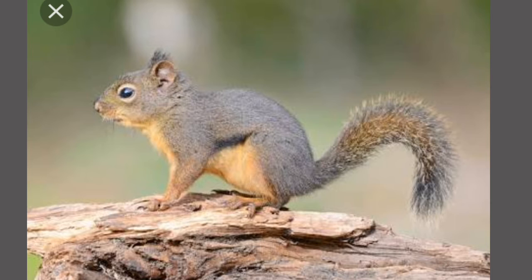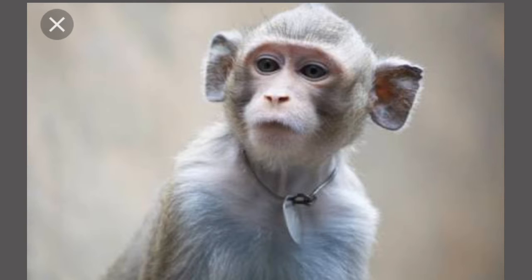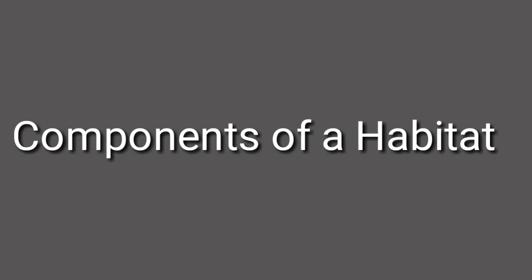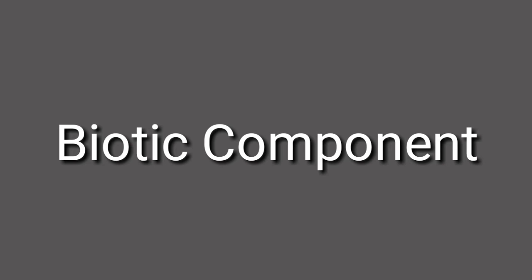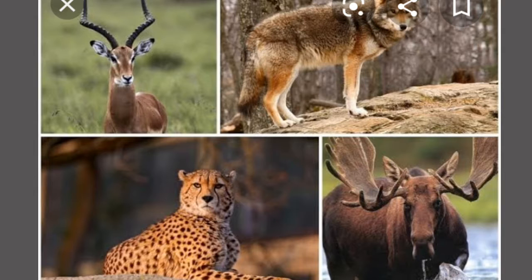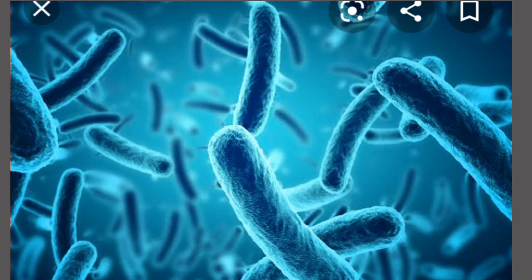Now let's discuss the components of habitat. In a habitat, two types of components occur. The first is living components, also called biotic components. The biotic component consists of plants, animals including humans, and microorganisms.